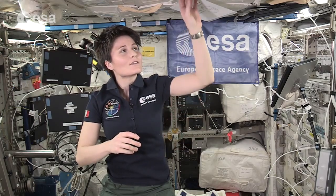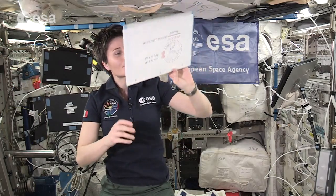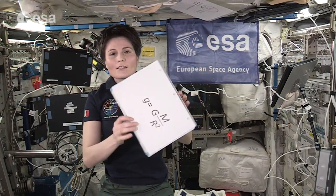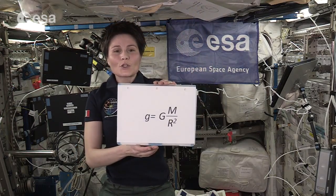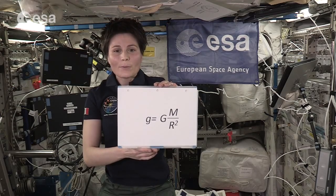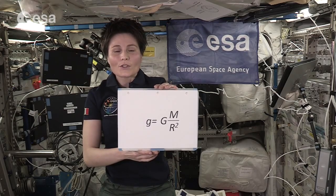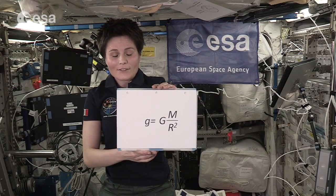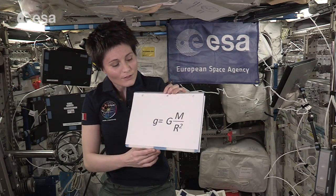We often say that all objects are weightless in space, but that does not mean that there is no gravity. Let's take a look at this equation. This equation allows us to determine the gravitational pull on the surface of a planet.